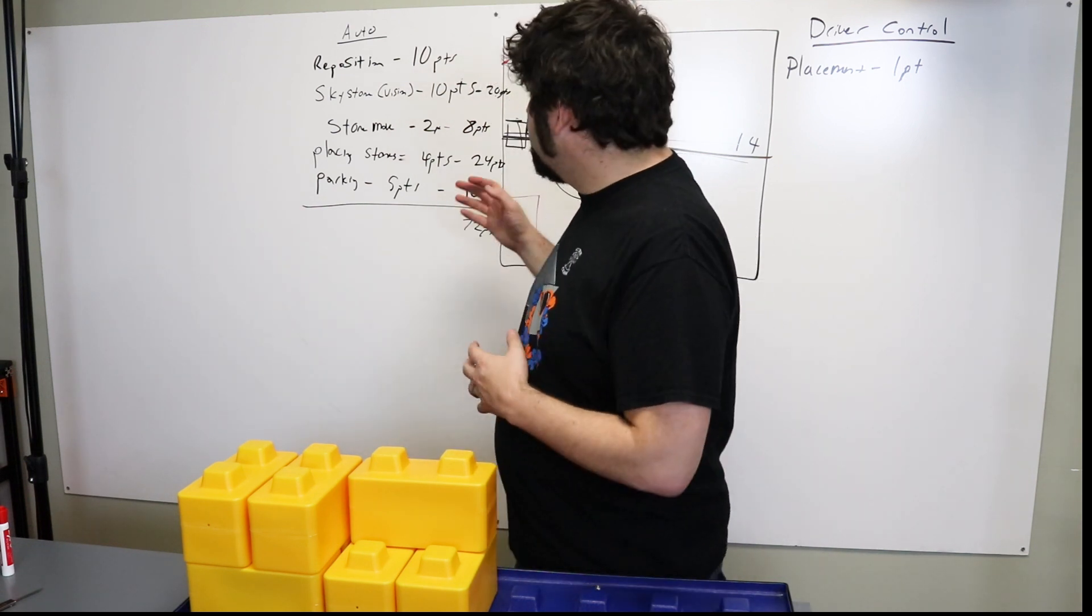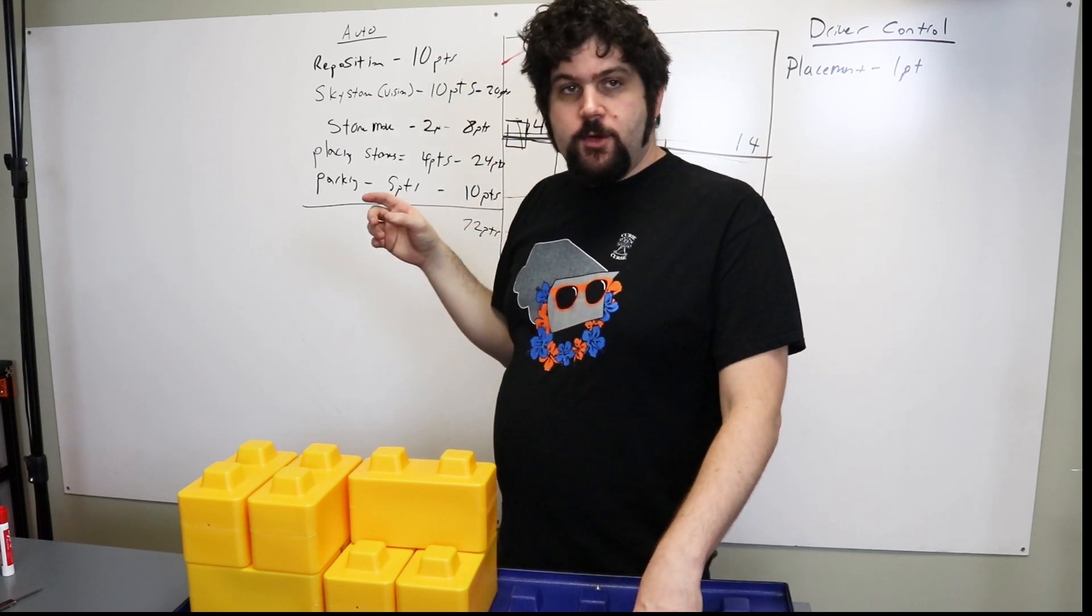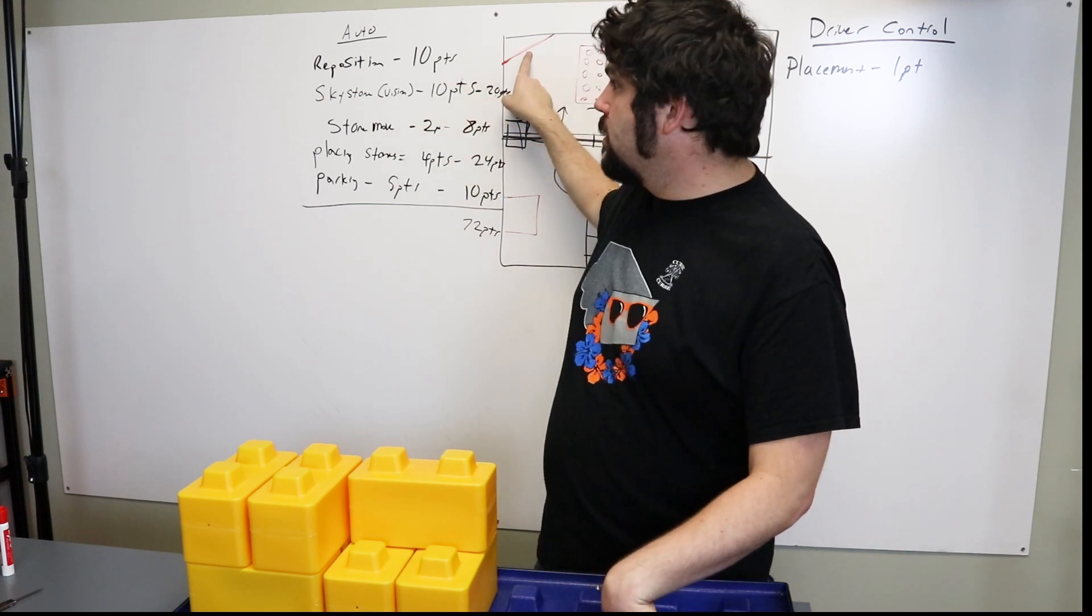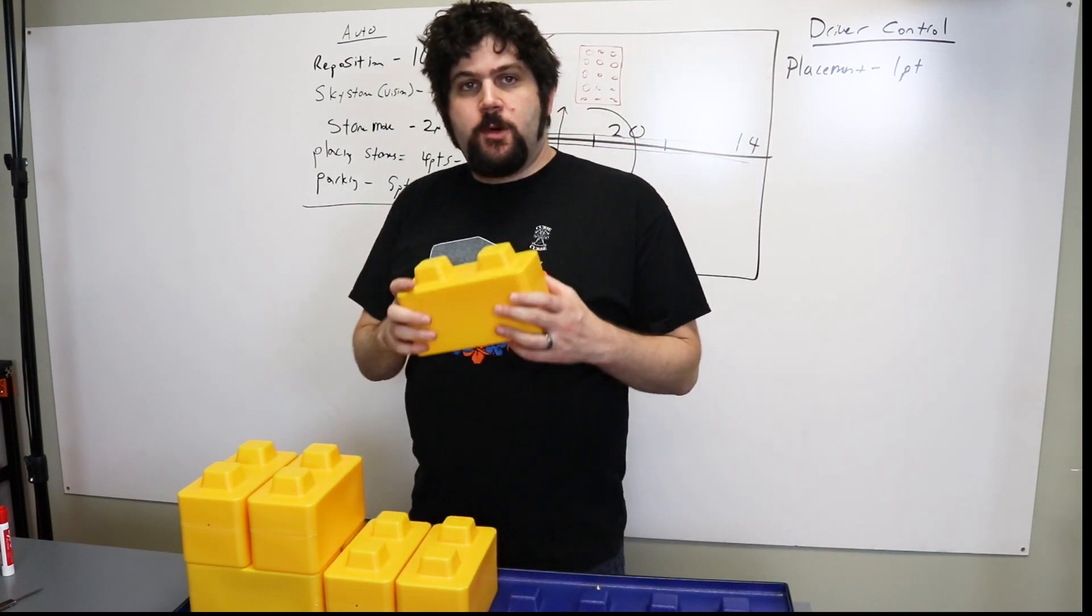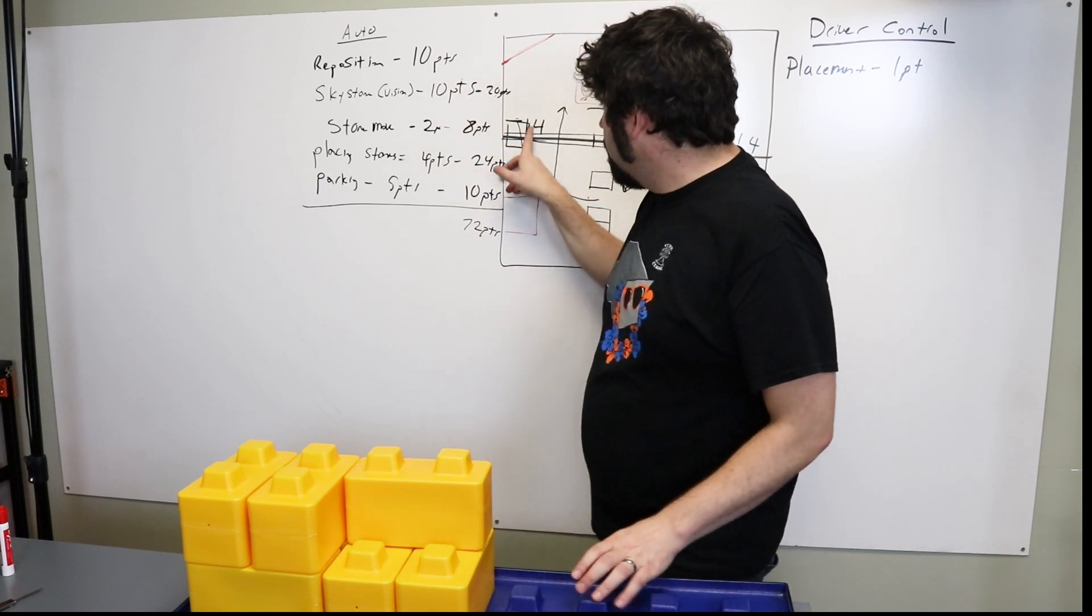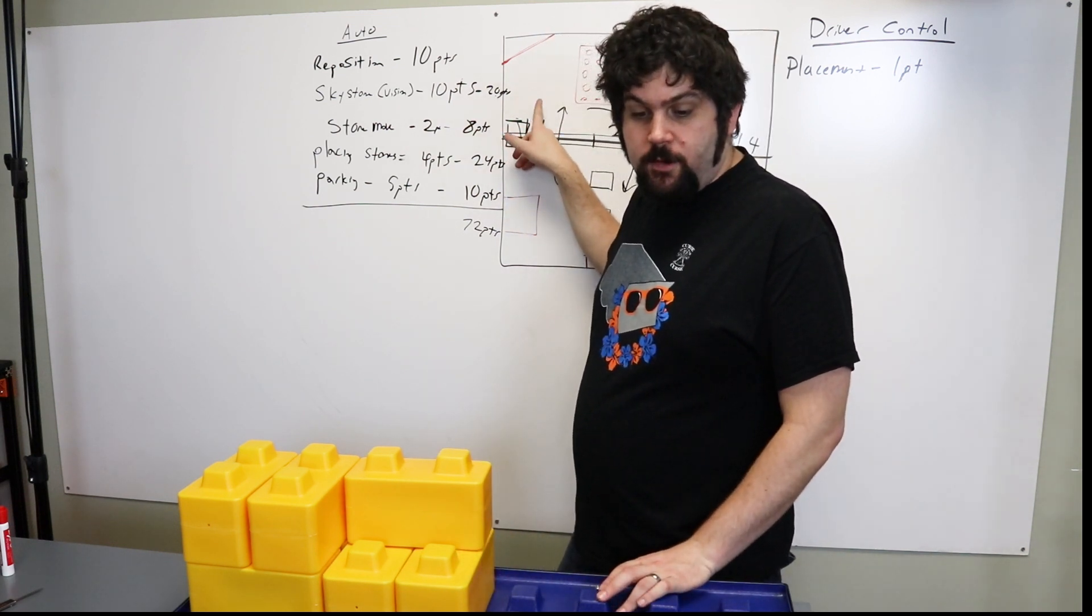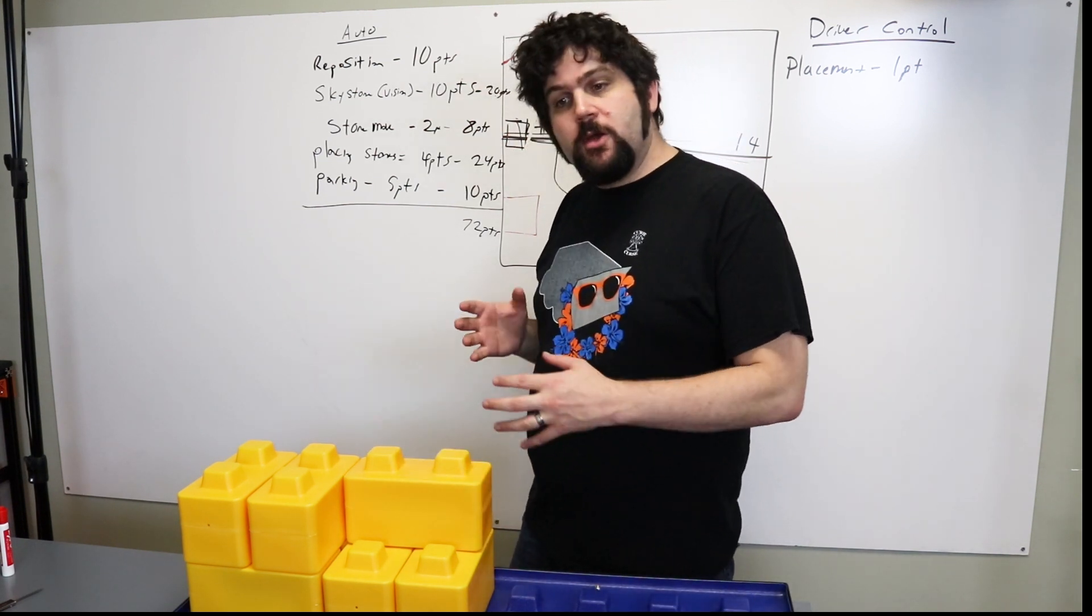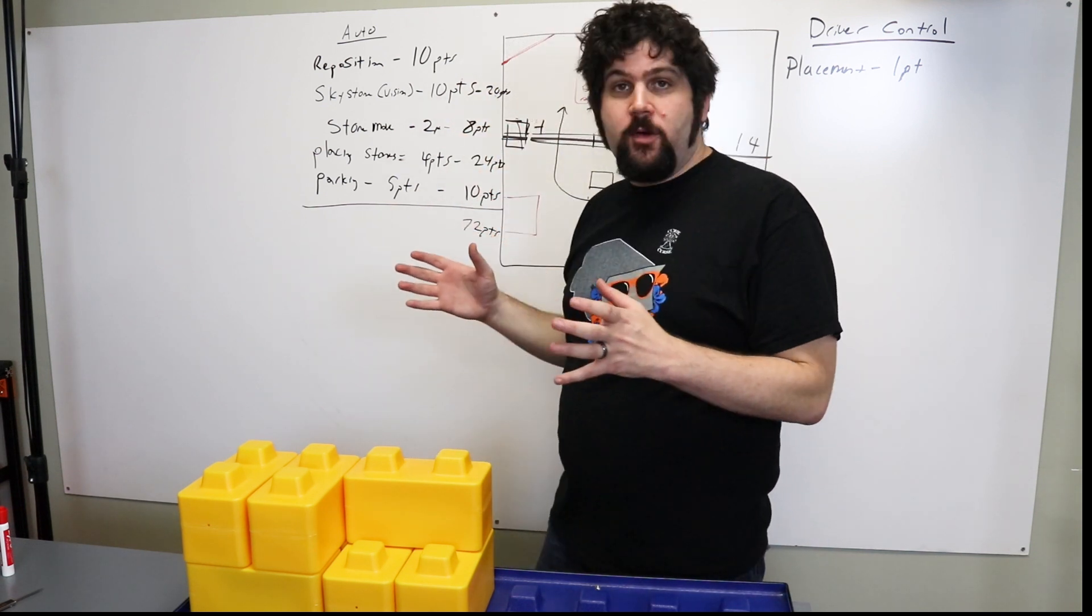So in Autonomous, there's a couple different things you can do. You can reposition your foundation, and that's worth 10 points if you move the foundation from the center to the thing. If you move a sky stone, which is one of the stones with one of the vision stickers on it, and you move that one underneath your 14-inch bridge all the way, that's worth 10 points if it's one of the first two stones. So the first two stones that you do go through there, that's 20 points. That's a huge amount of points in this game.